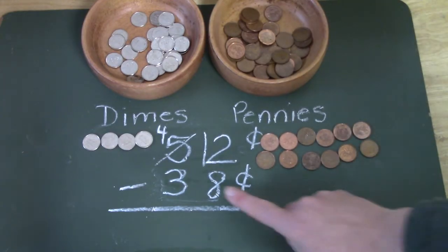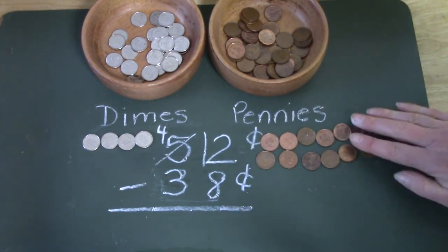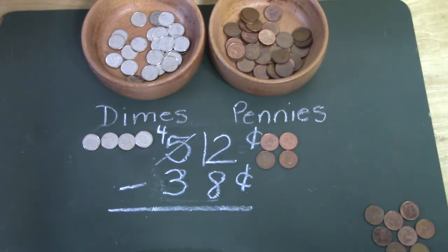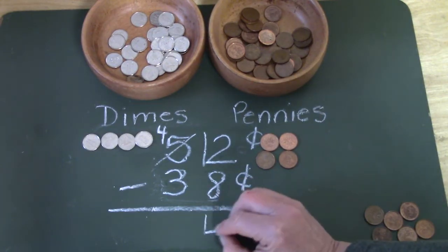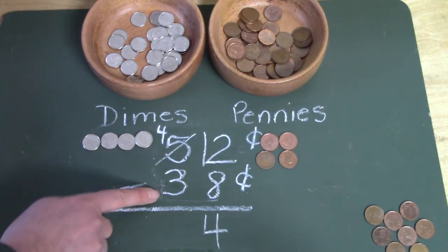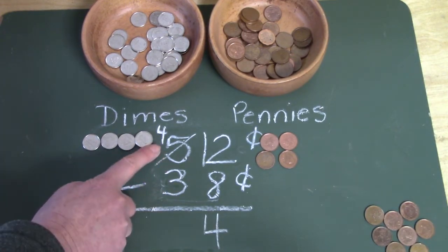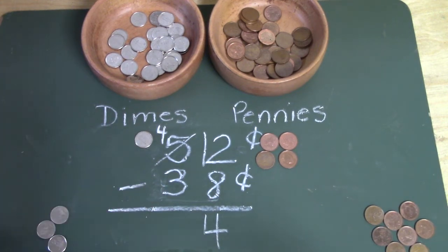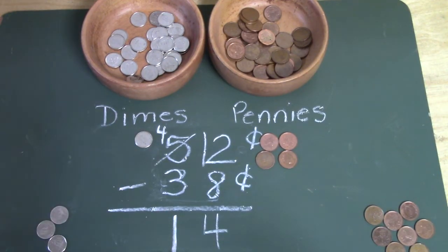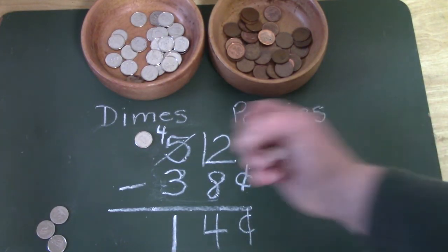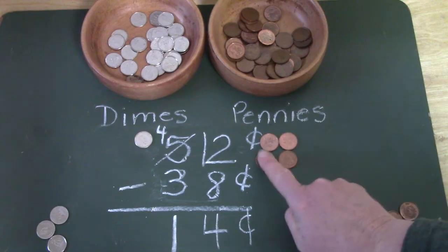Now that I have 12 pennies, I can subtract eight from 12: two, four, six, eight. How many pennies do I have left? Yes, I have four pennies. Now I'm going to look at my tens place, or the dimes place. I have four dimes and I'm going to take away three: one, two, three. Four take away three is one. So 52 cents take away 38 cents is 14 cents: 10, 11, 12, 13, 14.